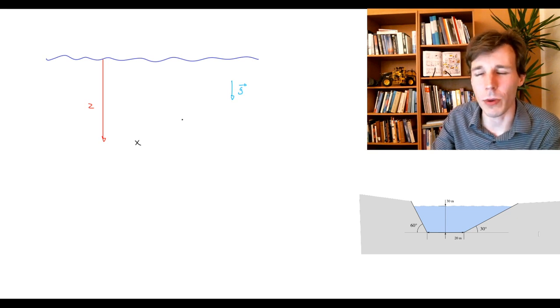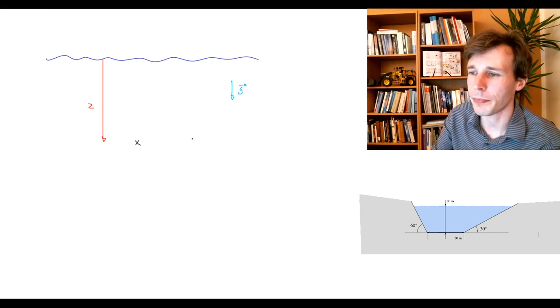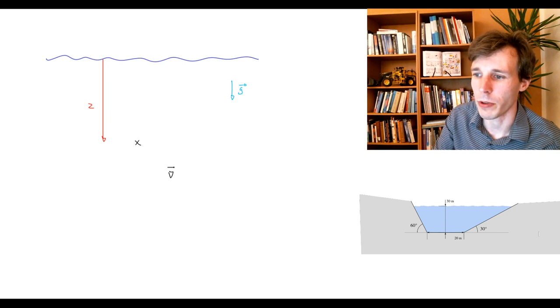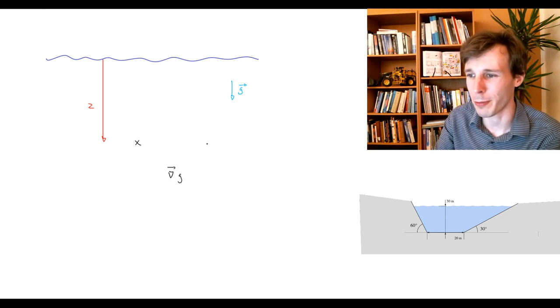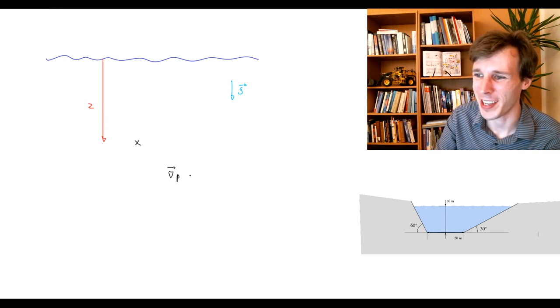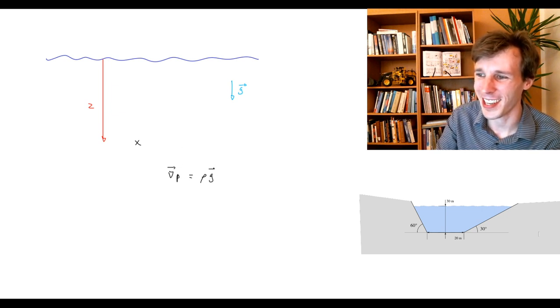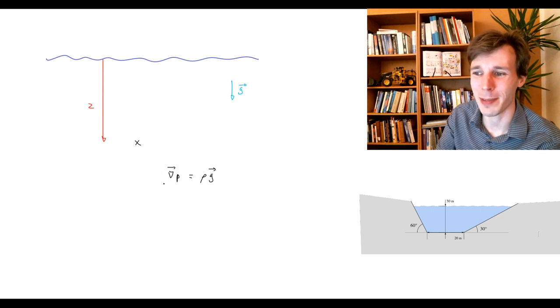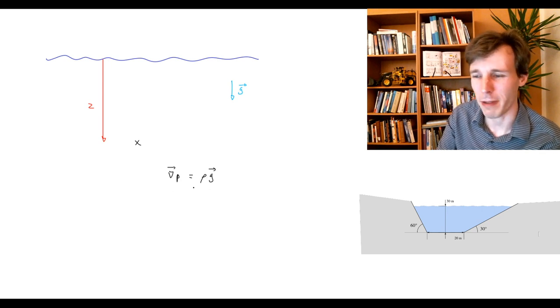What we have in static fluid is that grad P is ρG. So the gradient of pressure, grad P, is ρG, like this, the change in space of pressure is equal to density times gravity.